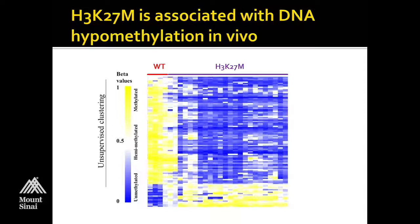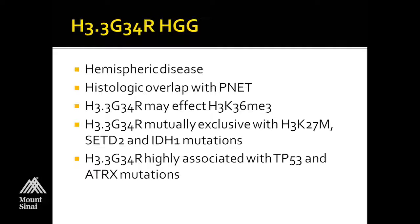The G34R mutation has actually been less studied, so we don't really know the mechanism. As mentioned, this is a hemispheric disease. Although it falls into the category of GBM, there is a histologic overlap with PNET, and whether the behavior of those that look morphologically more like PNETs is going to be different from those that look more like GBMs is unclear. It's thought that G34R will affect the K36 trimethyl mark with a mechanism similar to what we see with K27. The G34R mutation is mutually exclusive with H3K27M, and we also never see it with IDH1 mutations.